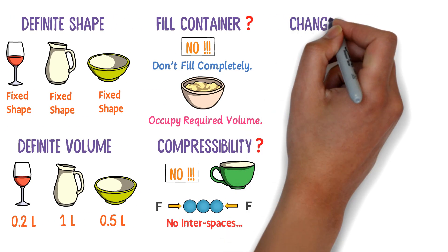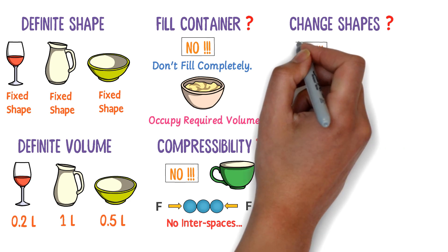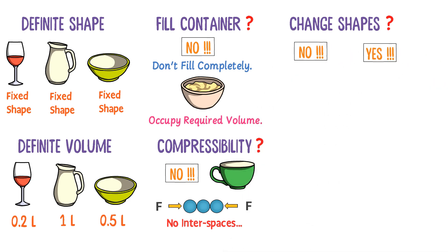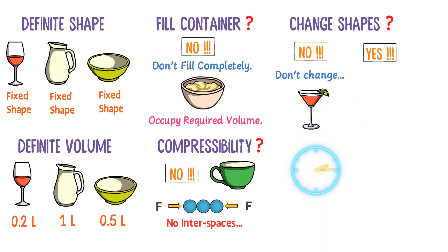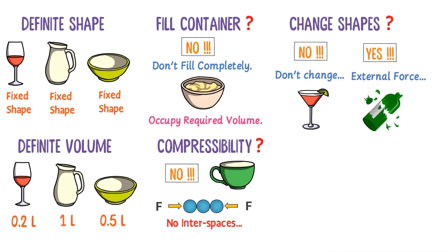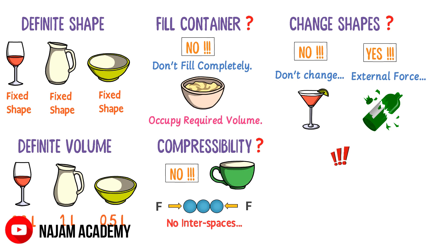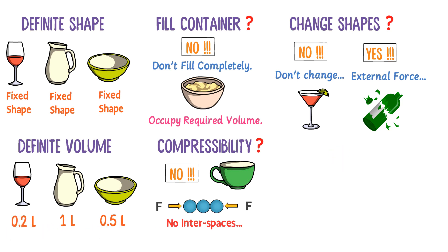Thirdly, can solids change their shapes? The answer is both no and yes. Solids do not change their shapes on their own — for example, if you keep this glass here, it will not change its shape with the passage of time. But if you exert external force on it, solids can change their shapes and be broken into pieces. So solids do not change shape by themselves, but they can change shape under external forces.